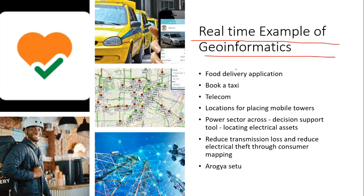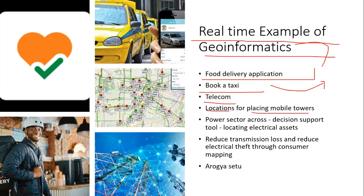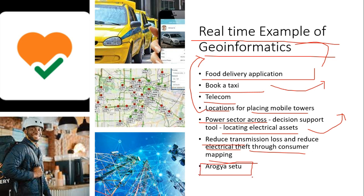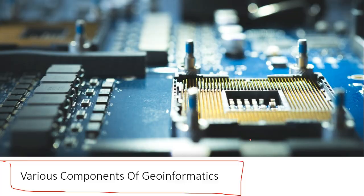Some real-time examples: food delivery apps like Zomato and Swiggy use geoinformatics to reach your location exactly. Booking a taxi from Ola or Uber — the driver reaching your point and dropping you at the destination — is also geoinformatics. In telecom, geoinformatics finds suitable places for mobile towers. In power sectors it supports site selection, locating electrical assets, reducing transmission loss, and the Aarogya Setu app for COVID case mapping also uses geoinformatics.